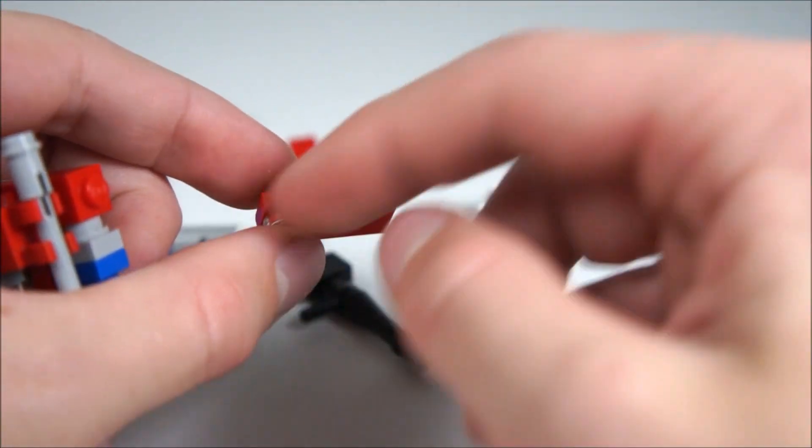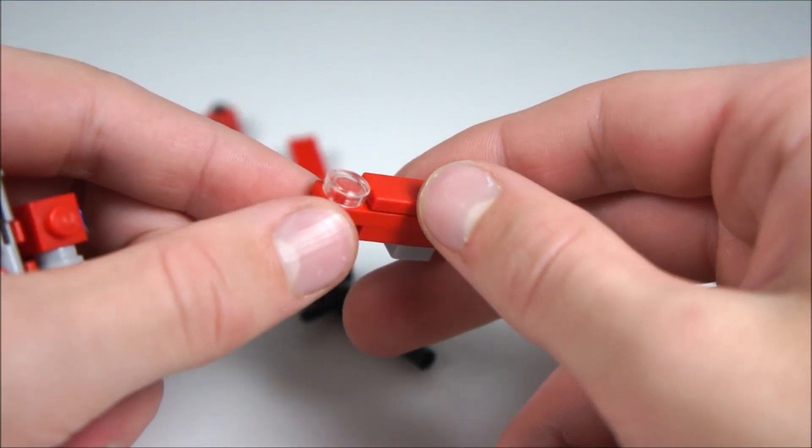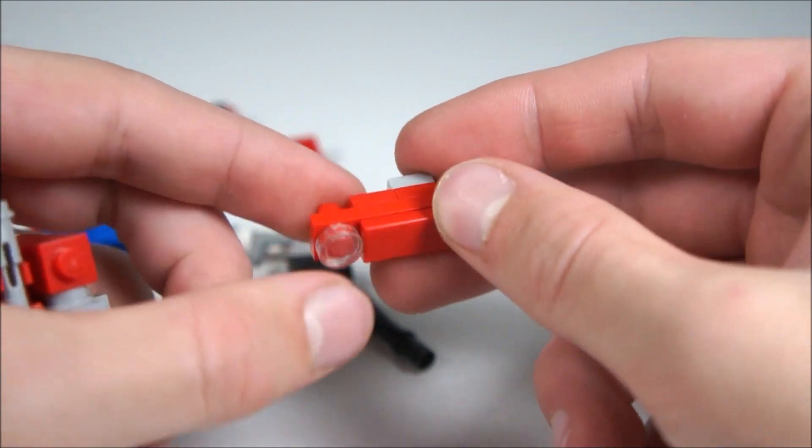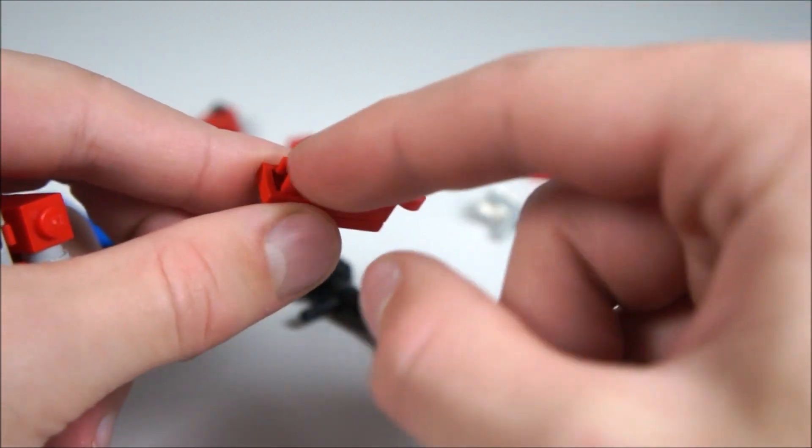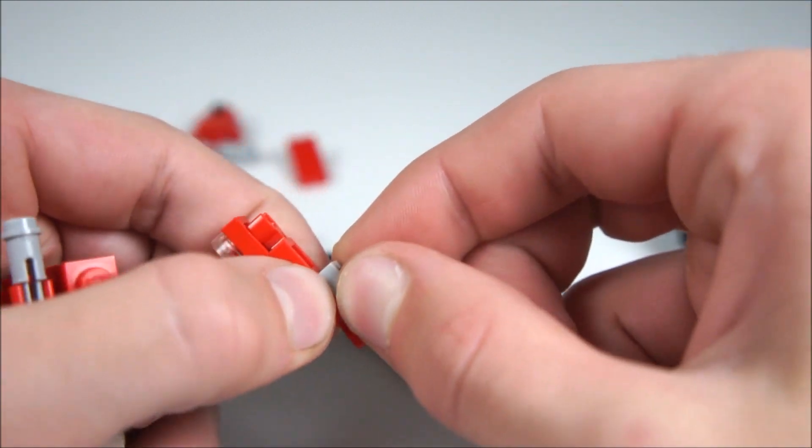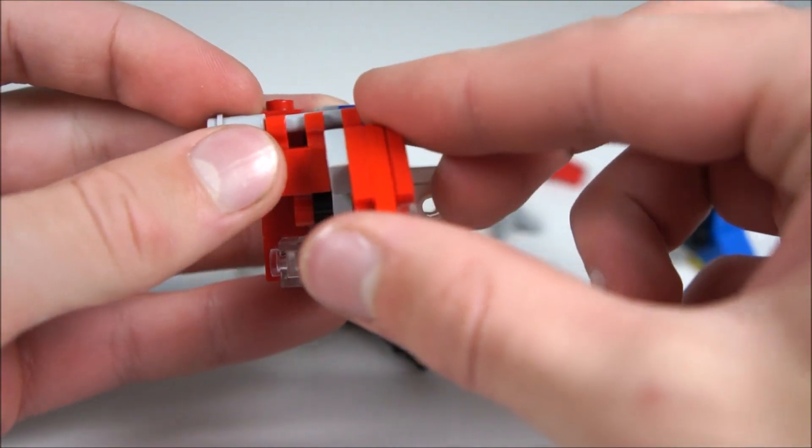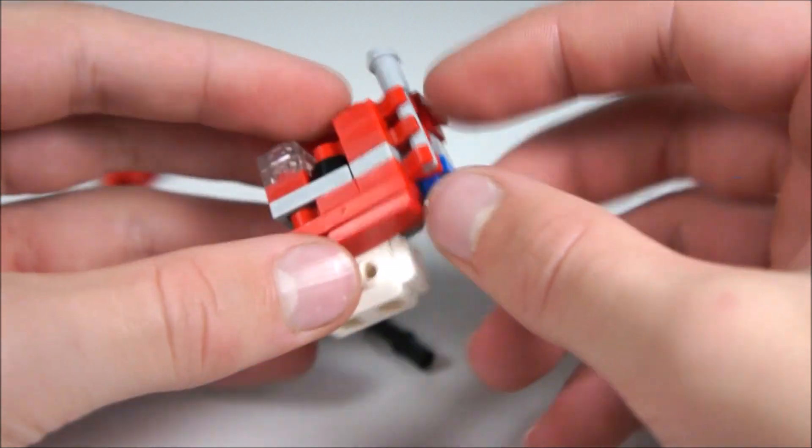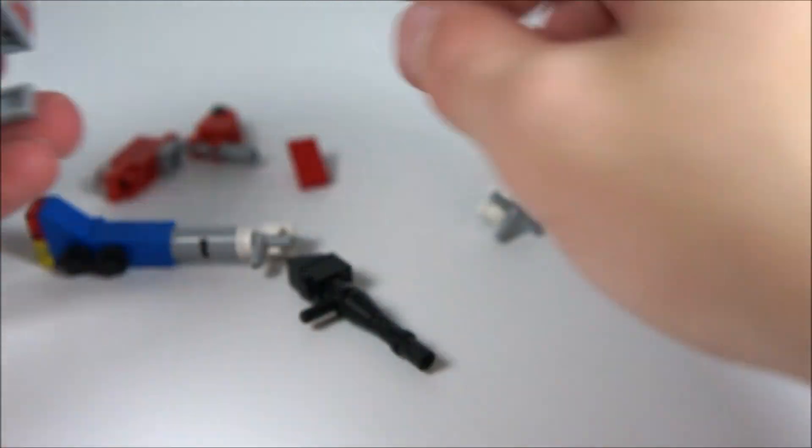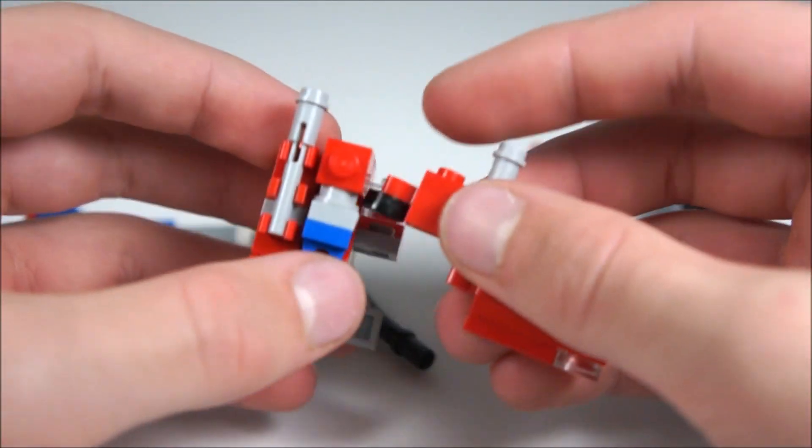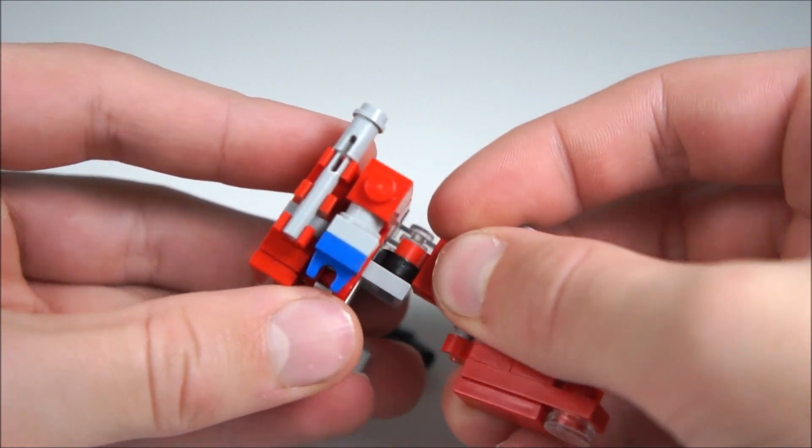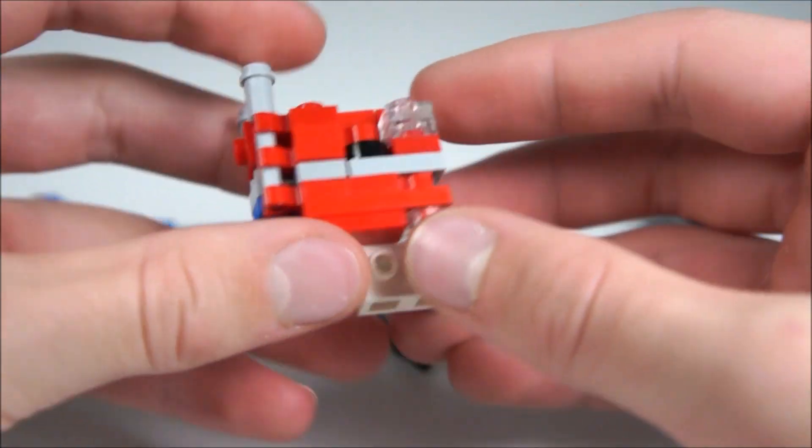And then build the forearm, which is a one by three with a little one by one stud. It has to be flat. And then a one by two there. And then another little hand piece and just a one by one gray piece right there. And it just slides in right there. Then you can build the other arm. Place that on the other side and just pop it in place.